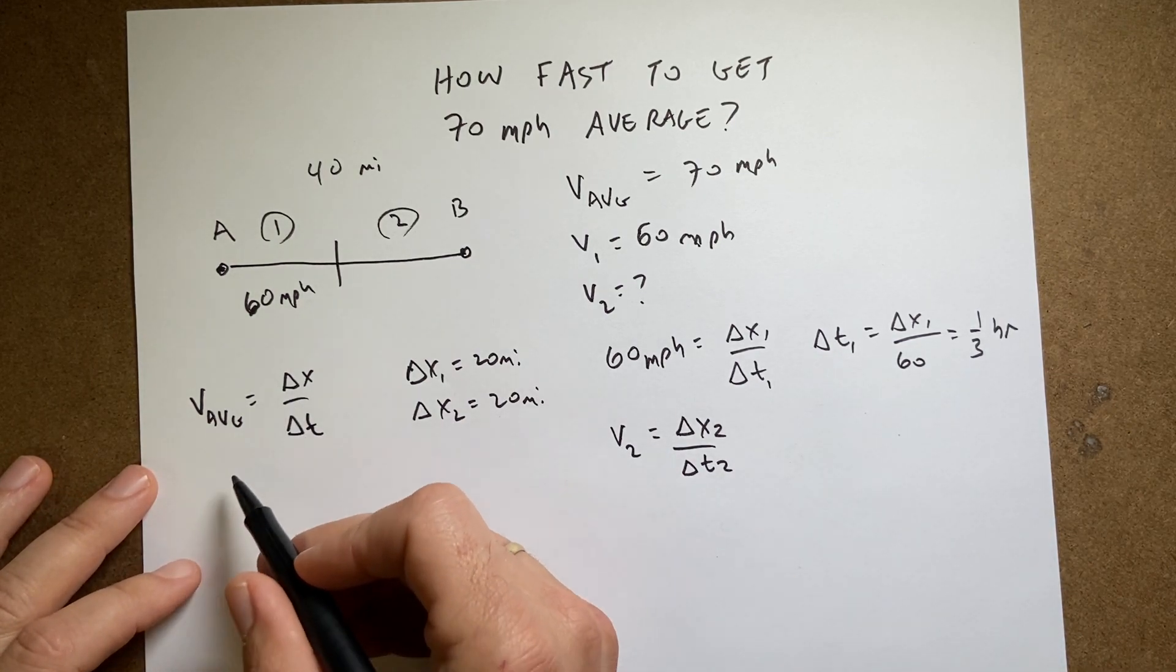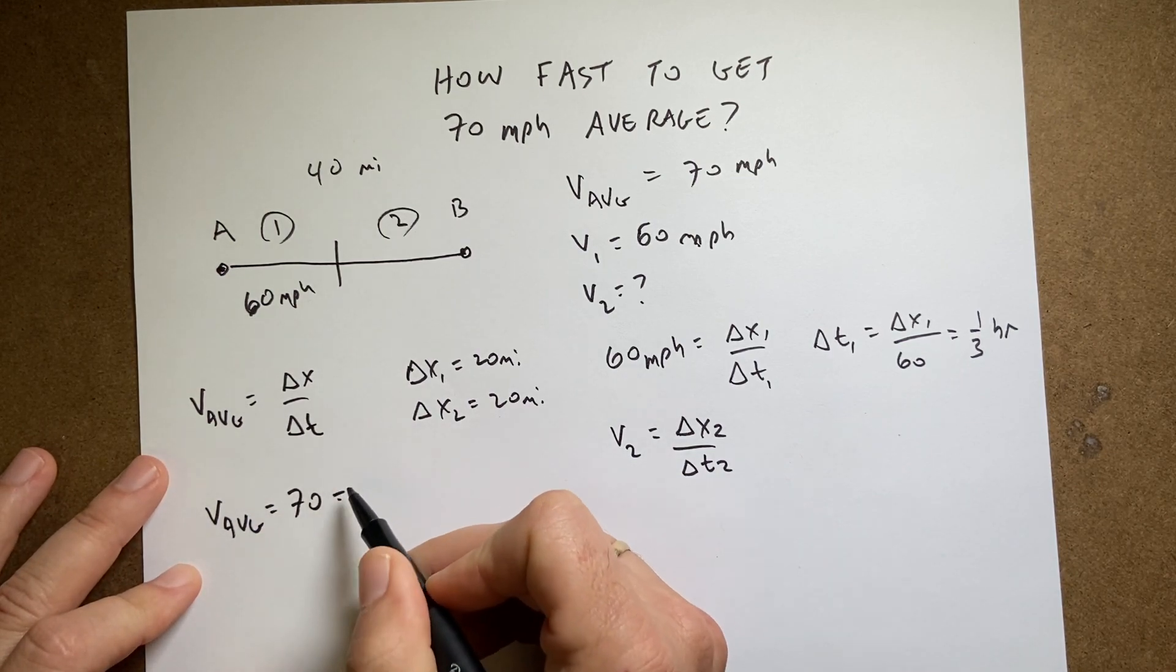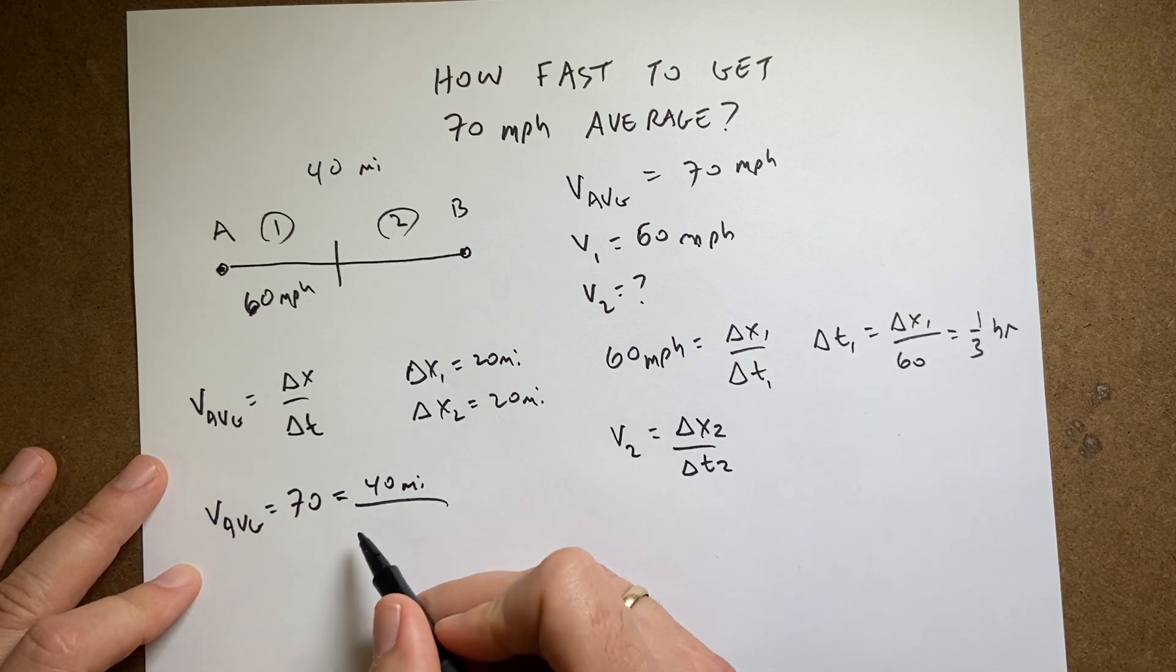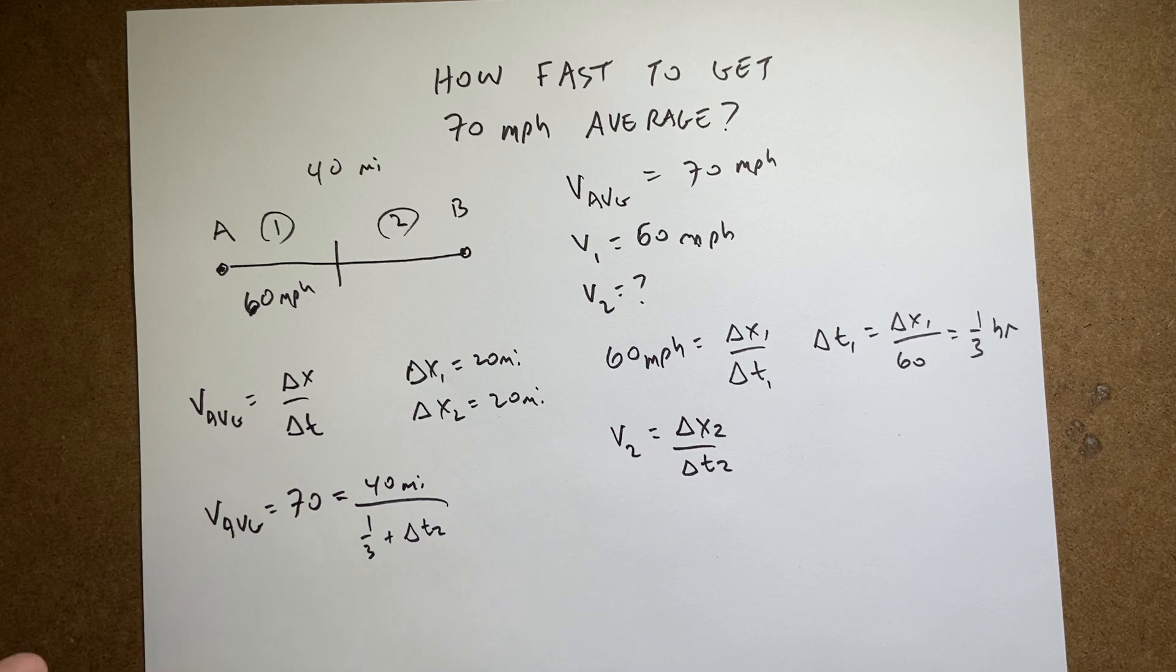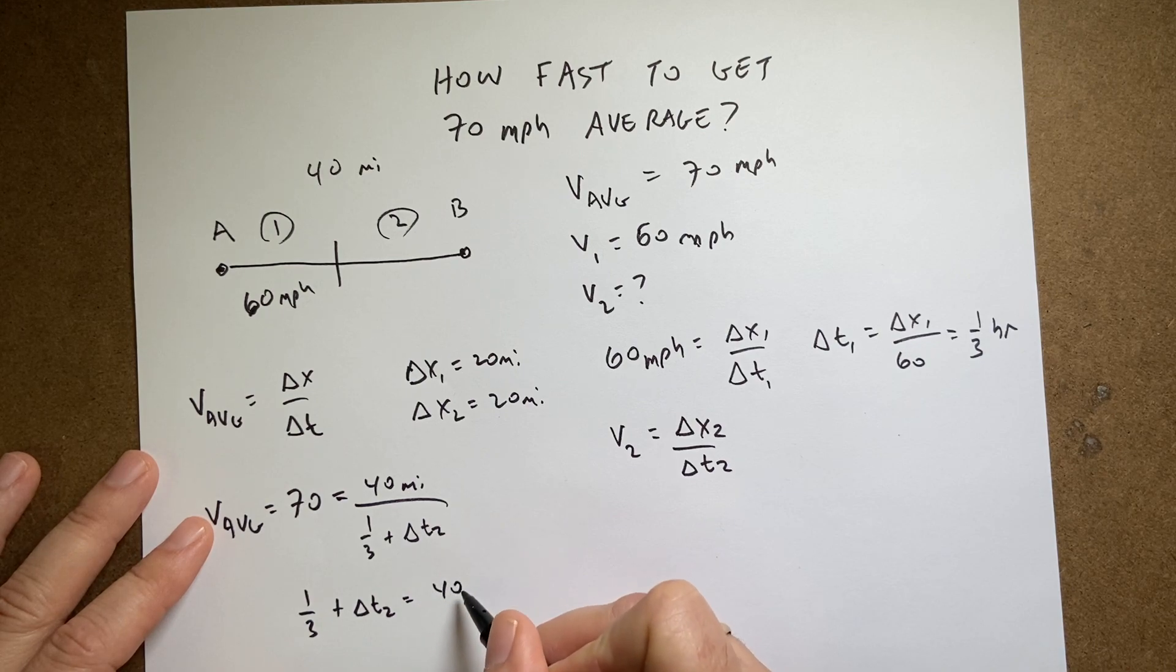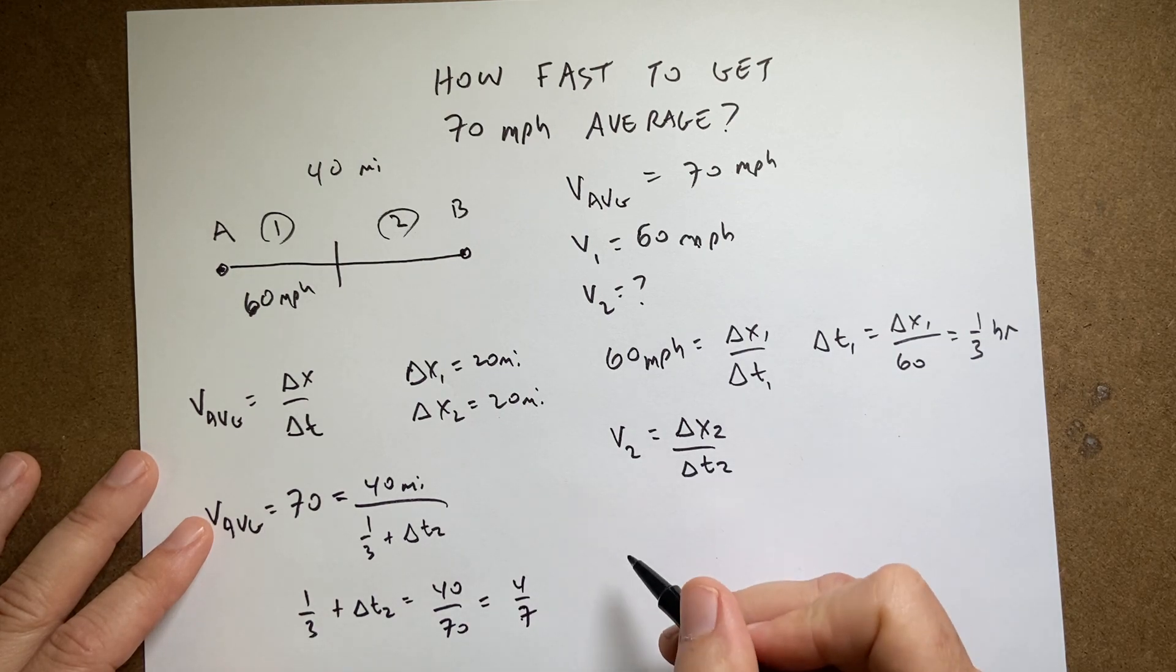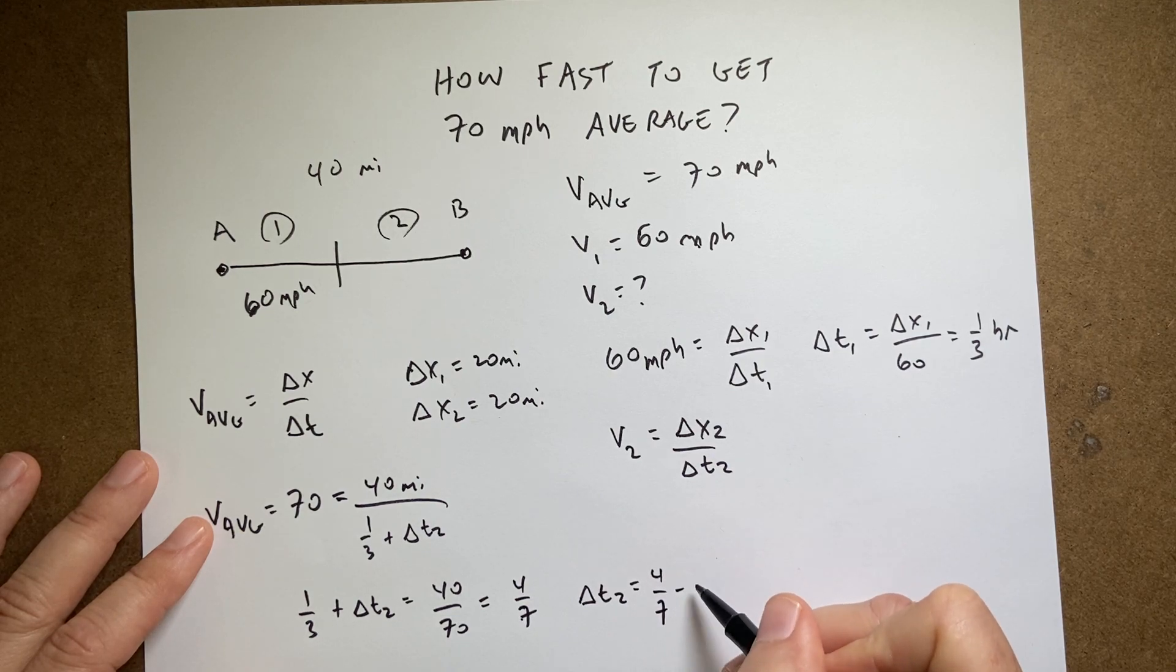So if I go up here to the total average, I say v average, which is 70, that's what I want it to be. It's going to be the total distance, 40 miles, and then the time which is delta t1, one third, plus delta t2 which I don't know. So I can multiply both sides by this and divide by 70 and I get one third plus delta t2 equals 40 divided by 70 equals four sevenths. Now I can subtract one third from both sides and I get delta t2 equals four sevenths minus one third.